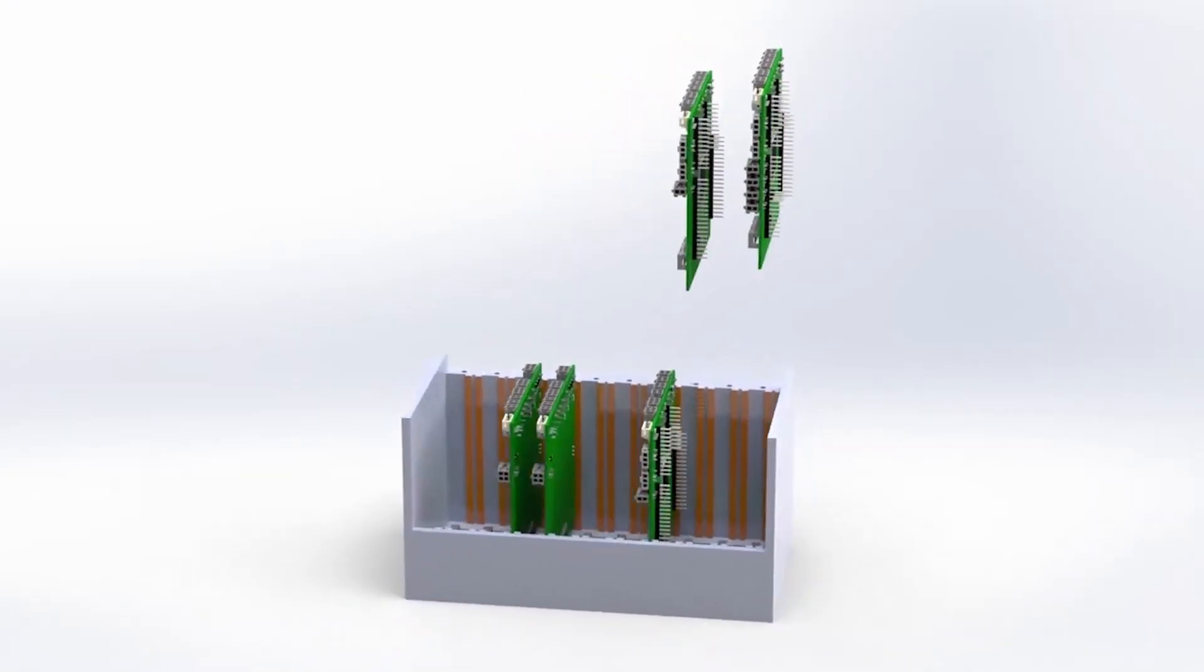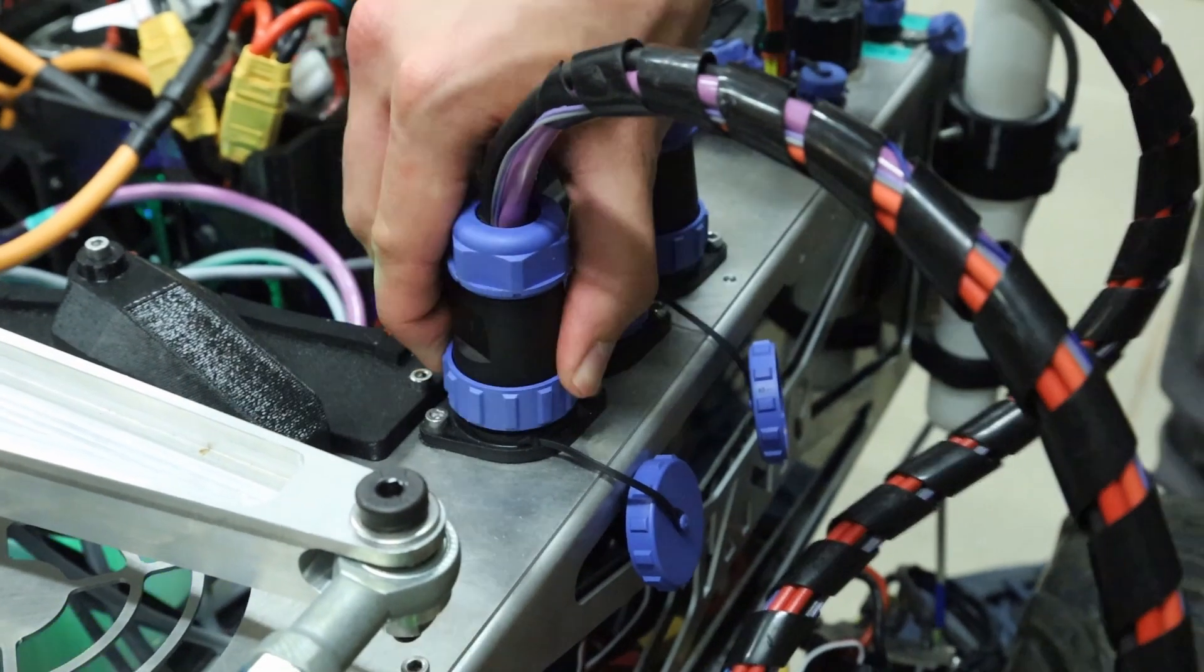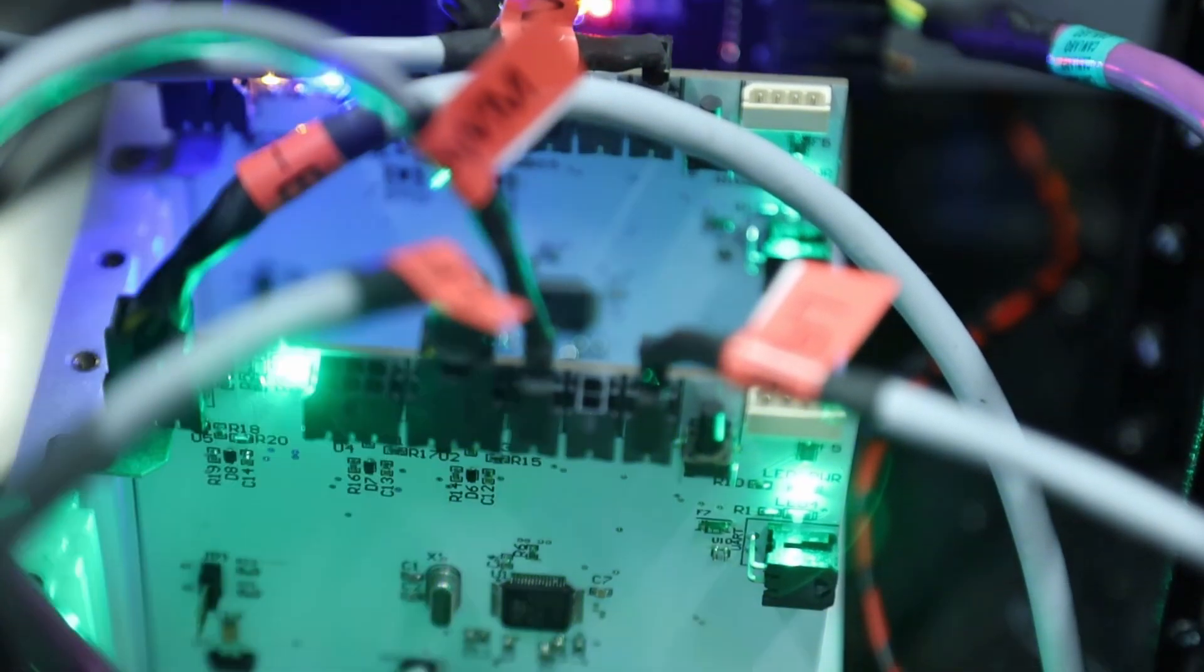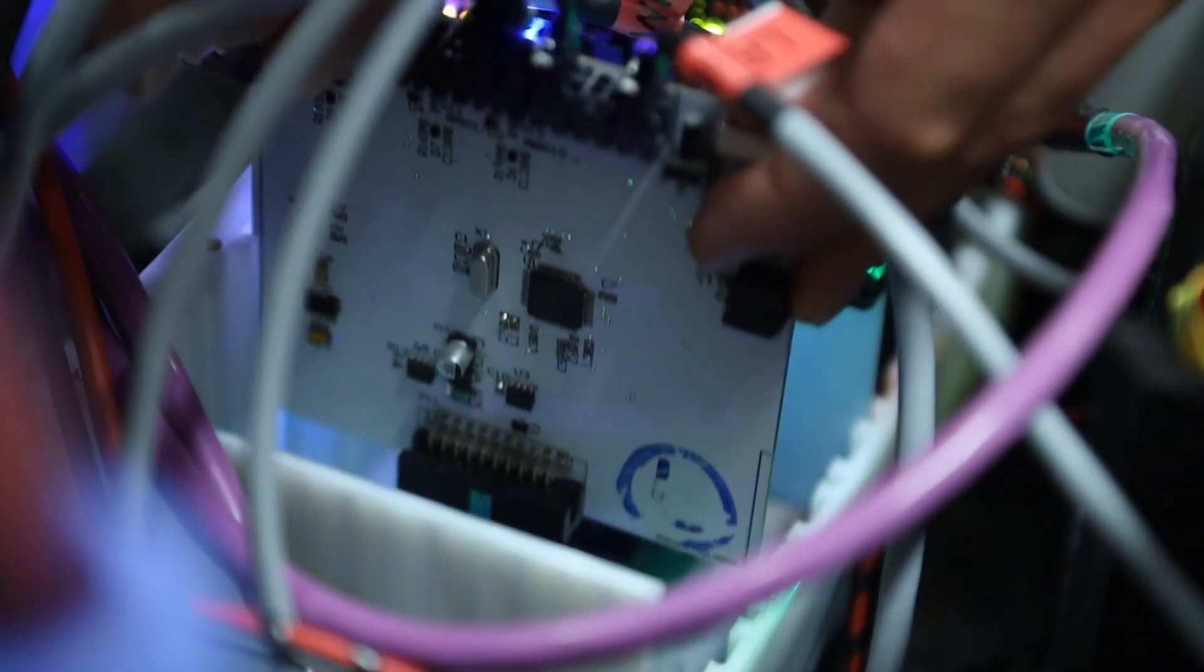For seamless communication, we employ a control area network, CAN, to facilitate data exchange among onboard components, enhancing performance and responsiveness. Furthermore, a dedicated rail system allows for easy integration of STM32-based electronic PCBs, serving as the command center for precise control of all Rover peripherals in various environments and tasks.